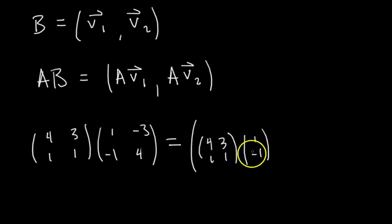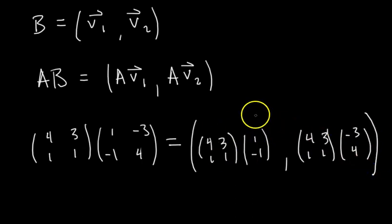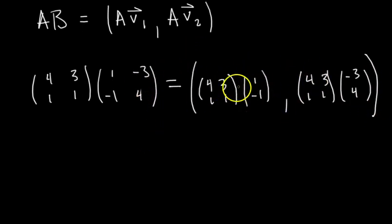We're calling this one our A matrix and this one our B matrix. We have A which is 4, 3, 1, 1 times V1, which is 1, negative 1. This matrix times a vector is our first column of the product matrix. And you're like, this is so much more confusing. What is happening? But I promise you it's a lot easier once you get good at it. And then our second column of our product matrix is A times V2, which is negative 3, 4.